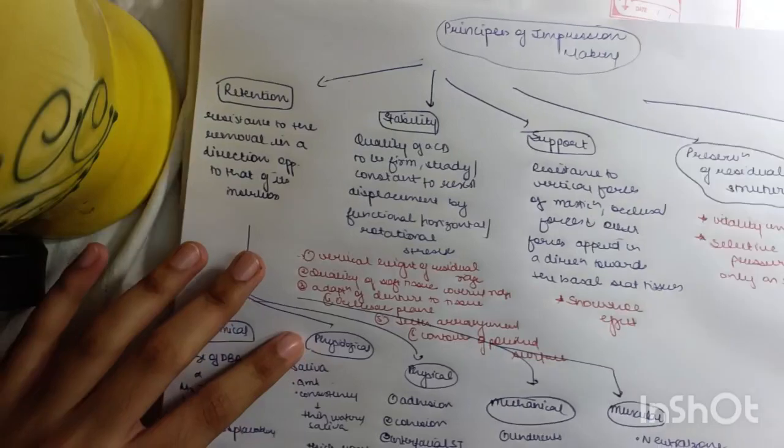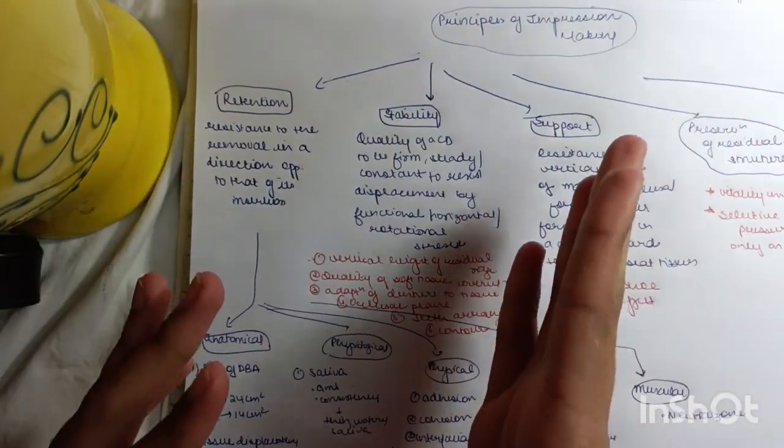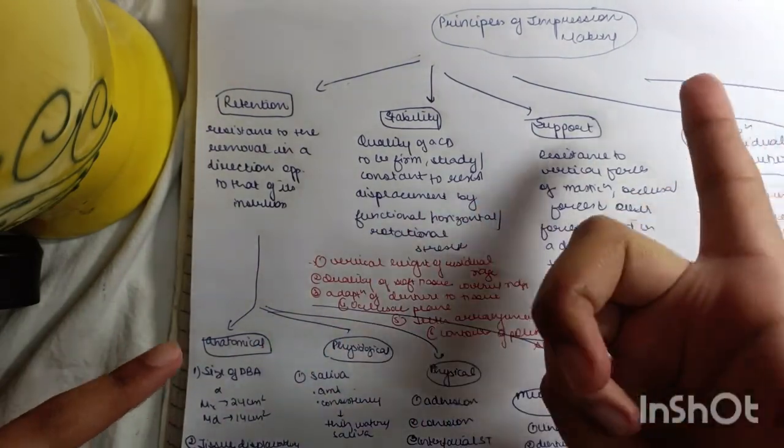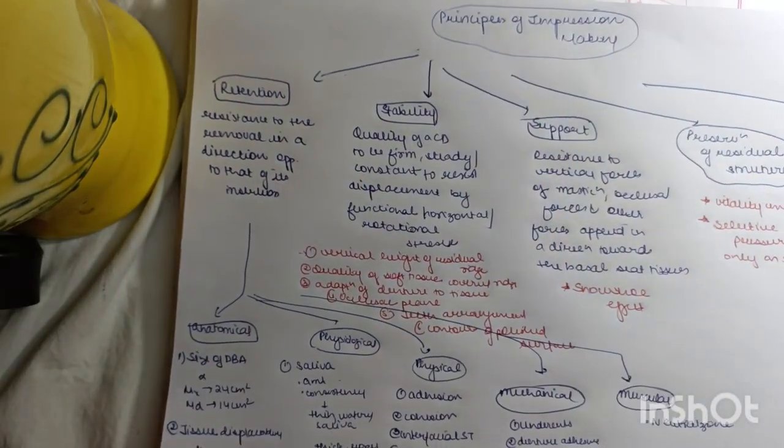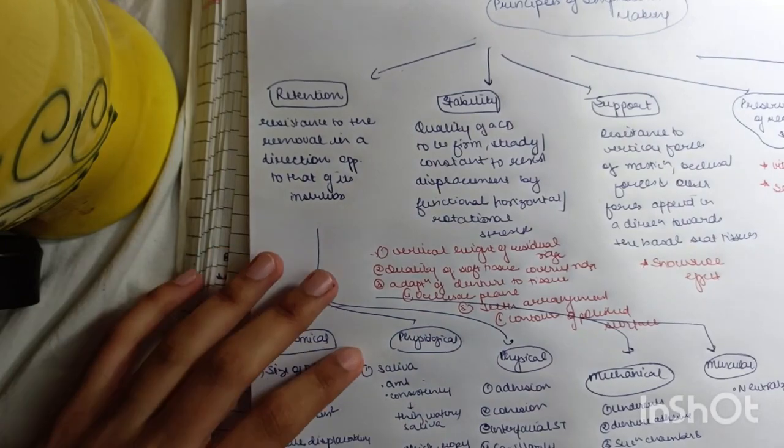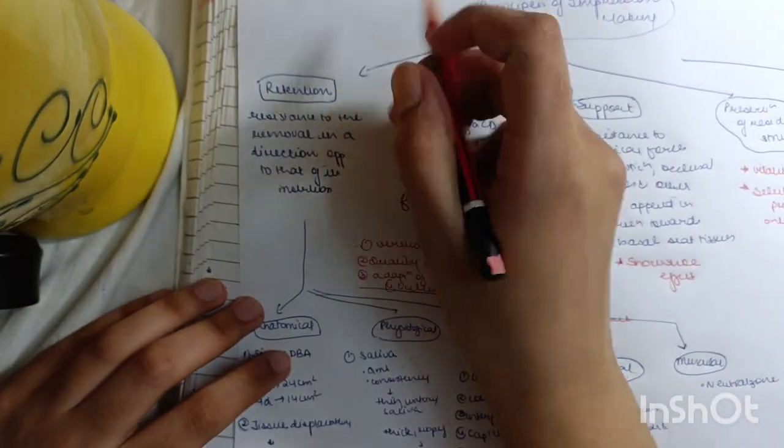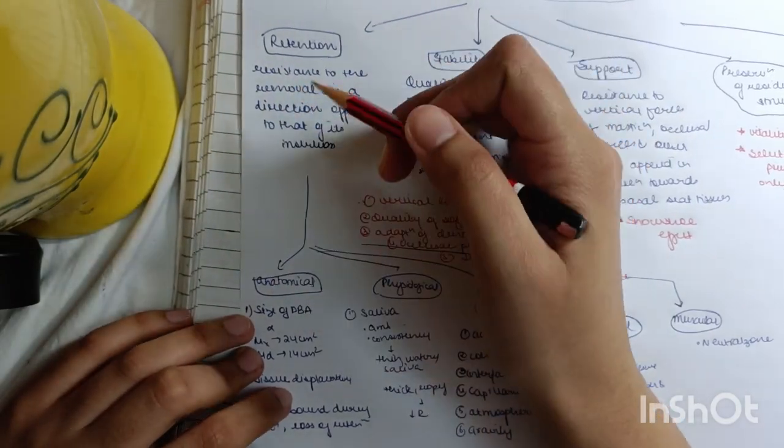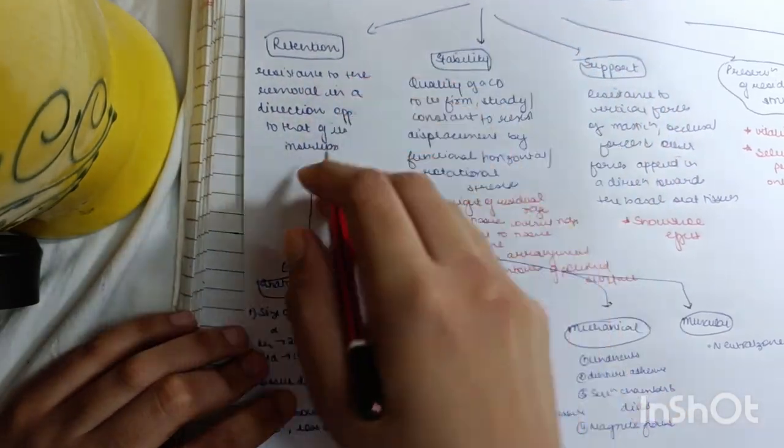Coming on to retention, it is the resistance to the removal of the denture in a direction opposite to that of its insertion. Very easy to understand: suppose you have something and you have to retain it, so basically you have to resist the removal in the direction opposite to the direction of insertion.